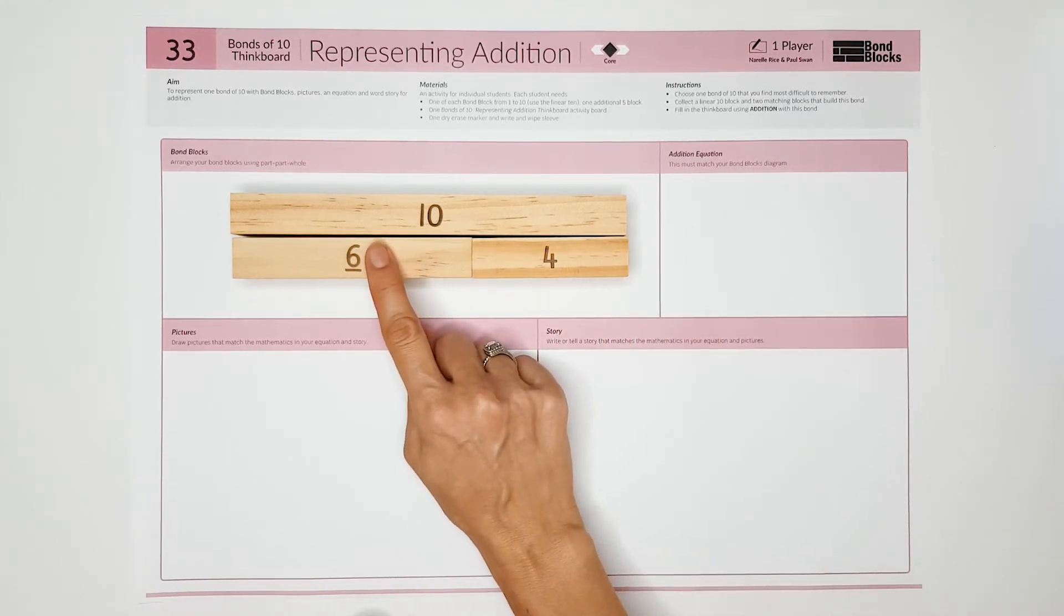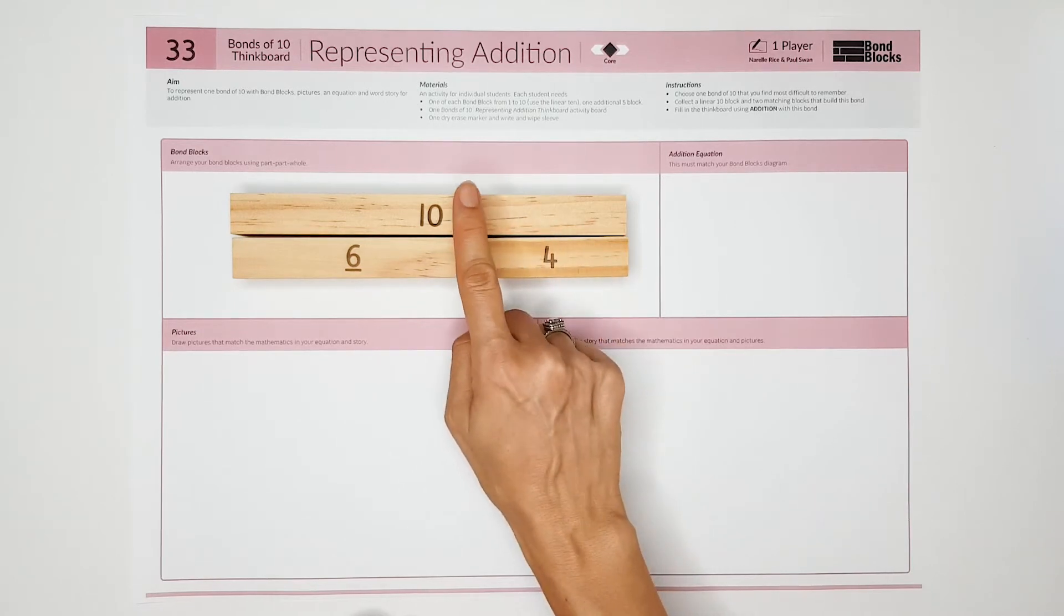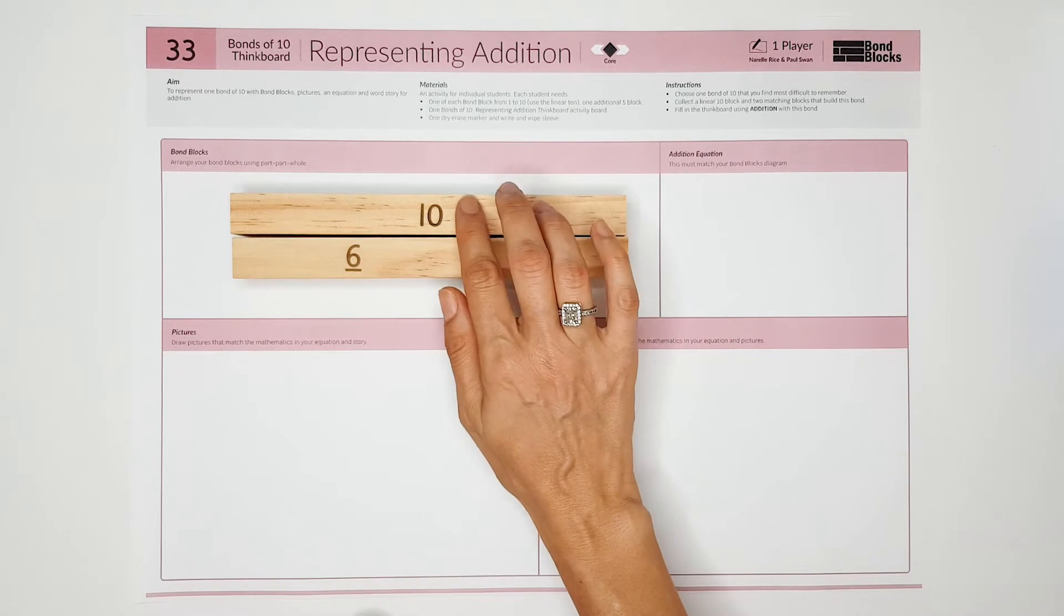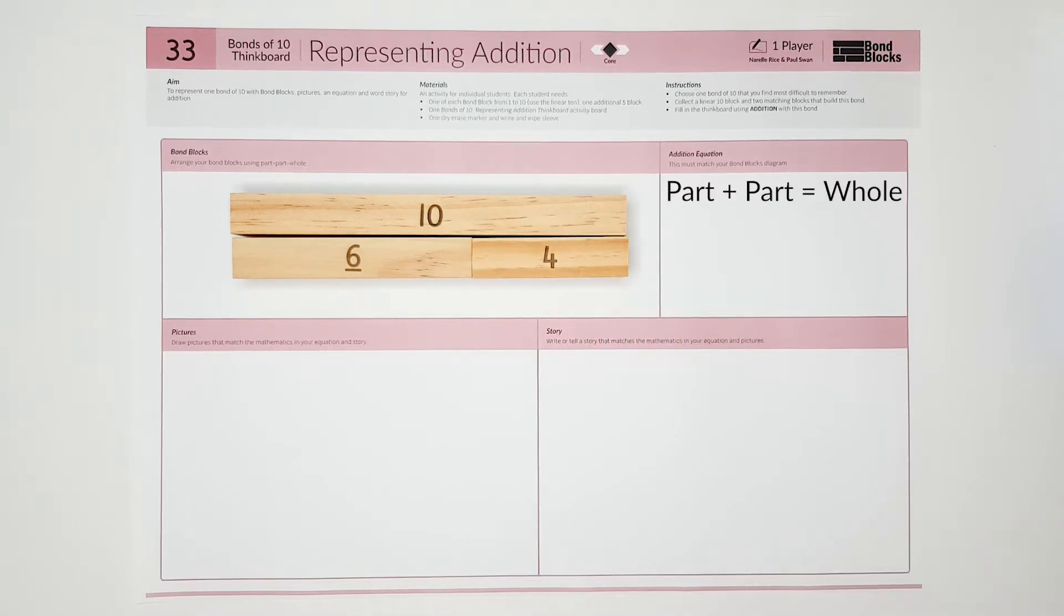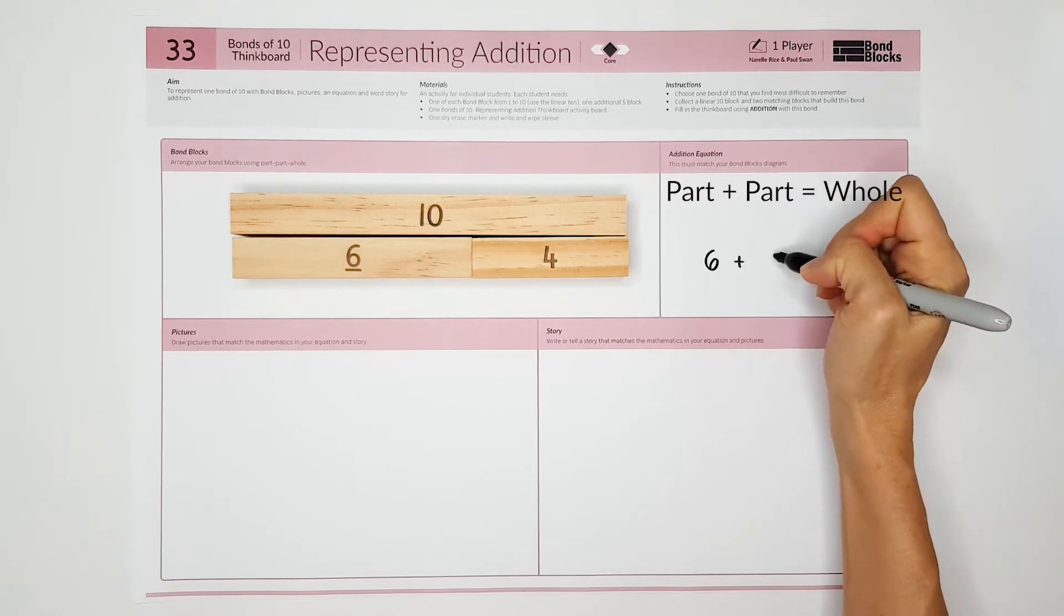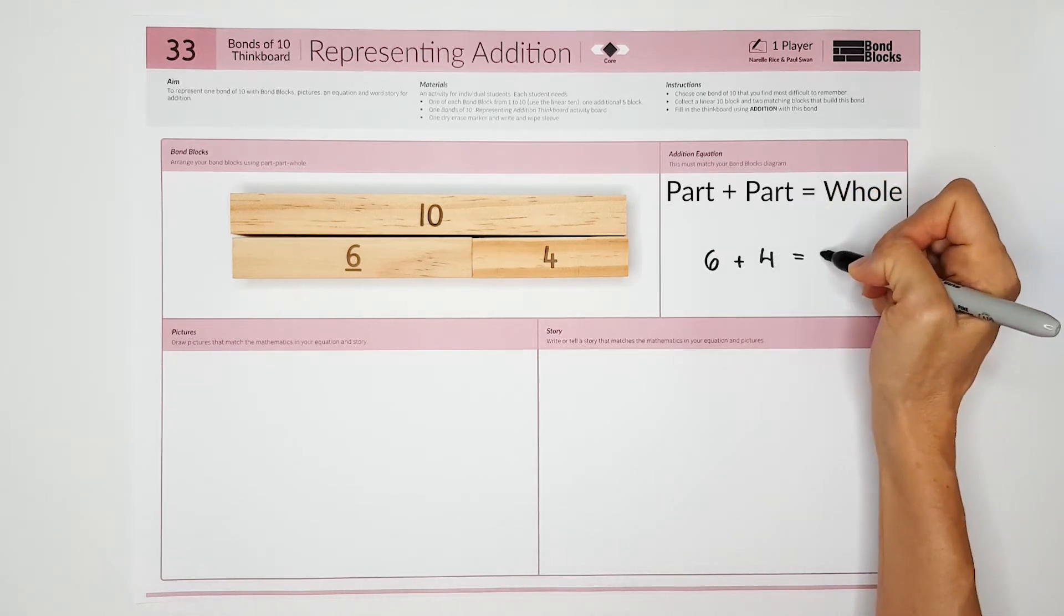we say part add part equals whole. 6 add 4 equals 10. I will write this: 6 add 4 equals 10.